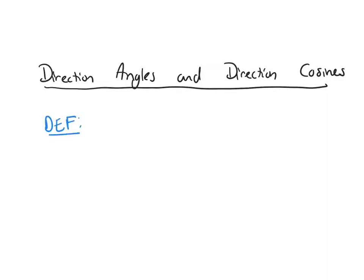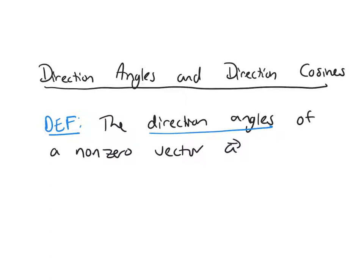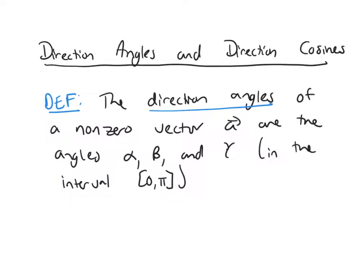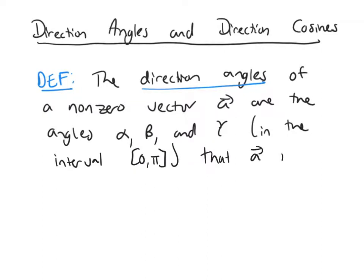The direction angles of a nonzero vector A are the angles alpha, beta, and gamma. These angles are all in the interval 0 to pi that the vector A makes with the positive x, y, and z axis respectively.